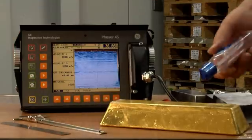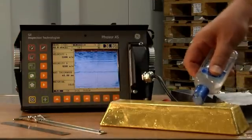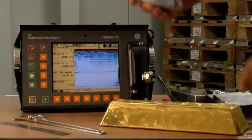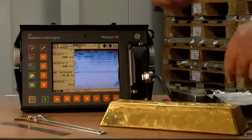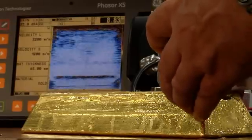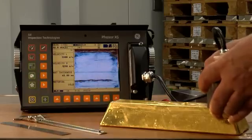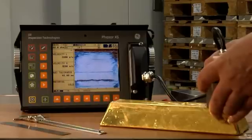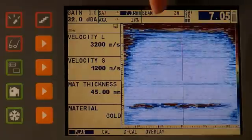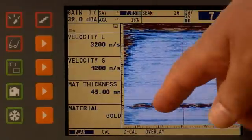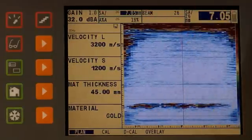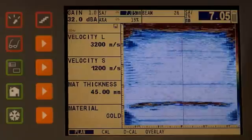The first thing we have to do is apply a gel. The purpose of the gel is to exclude the air from between the probe and the gold bar. We then put the probe onto the surface and look at the image that we get on the screen of the Phaser, which basically shows us the top of the material, the bottom of the material, and this is where we are non-destructively looking inside the material.